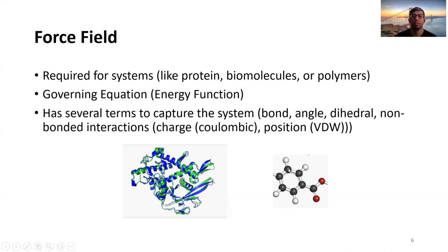For example, in a polymer or protein there are bonds, there are angles, there are dihedrals — angles that are not in the same plane — and also non-bonded interactions for charge, that is Coulombic interaction, or for position, like van der Waals interaction. So if you want to define the whole system realistically, you have to write terms corresponding to these parameters: bonds, angles, dihedrals.